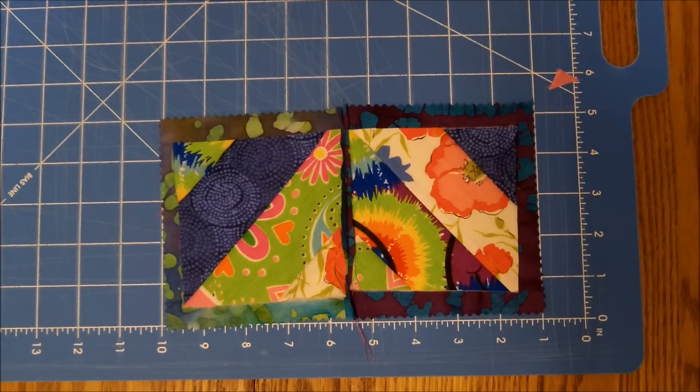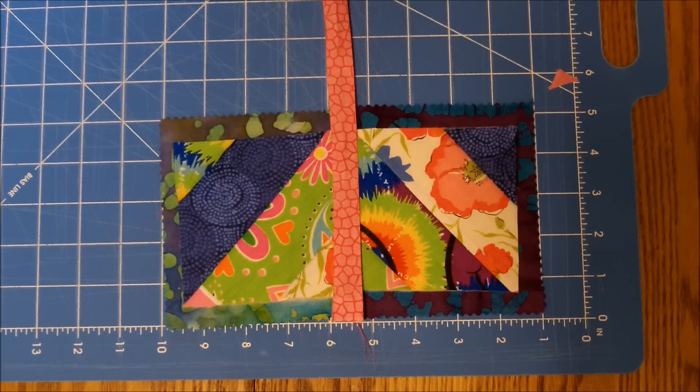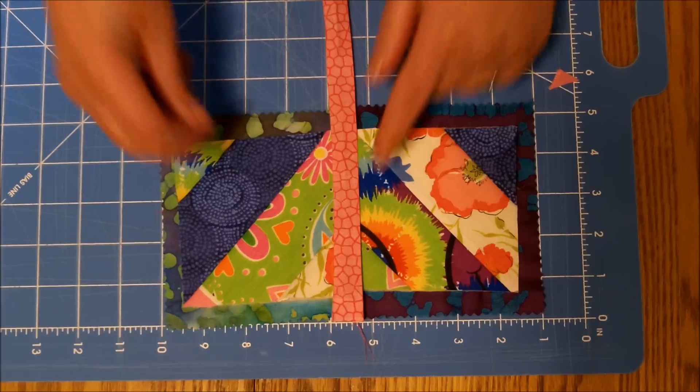Once you have it trimmed and laying flat, take your cover piece, like so, and pin it on to make sure it stays. And then you're going to sew down the sides.